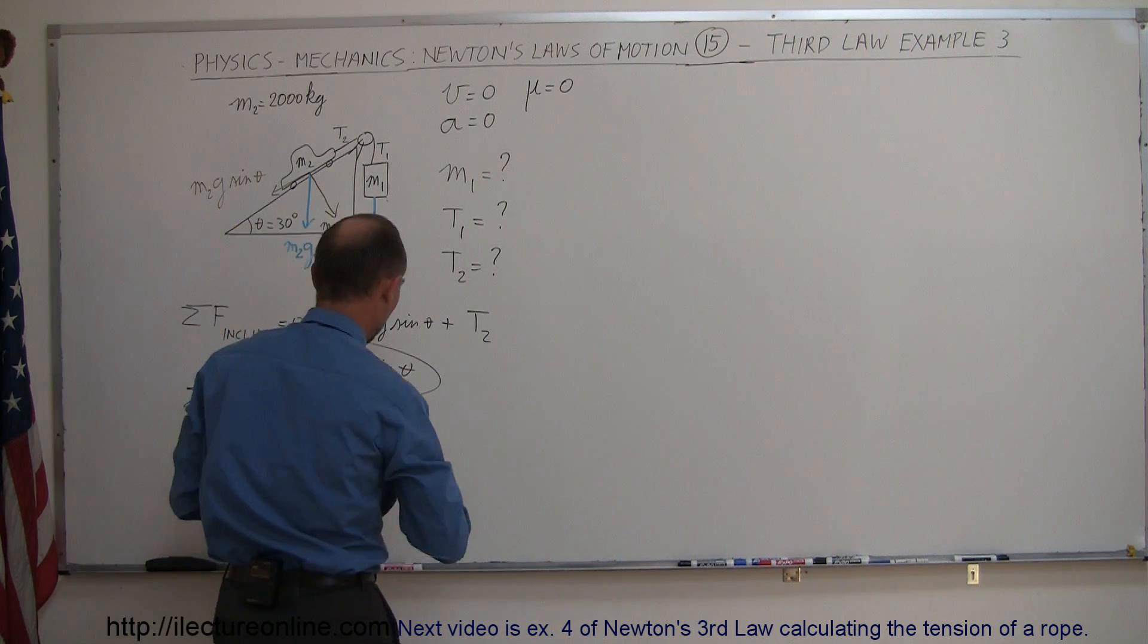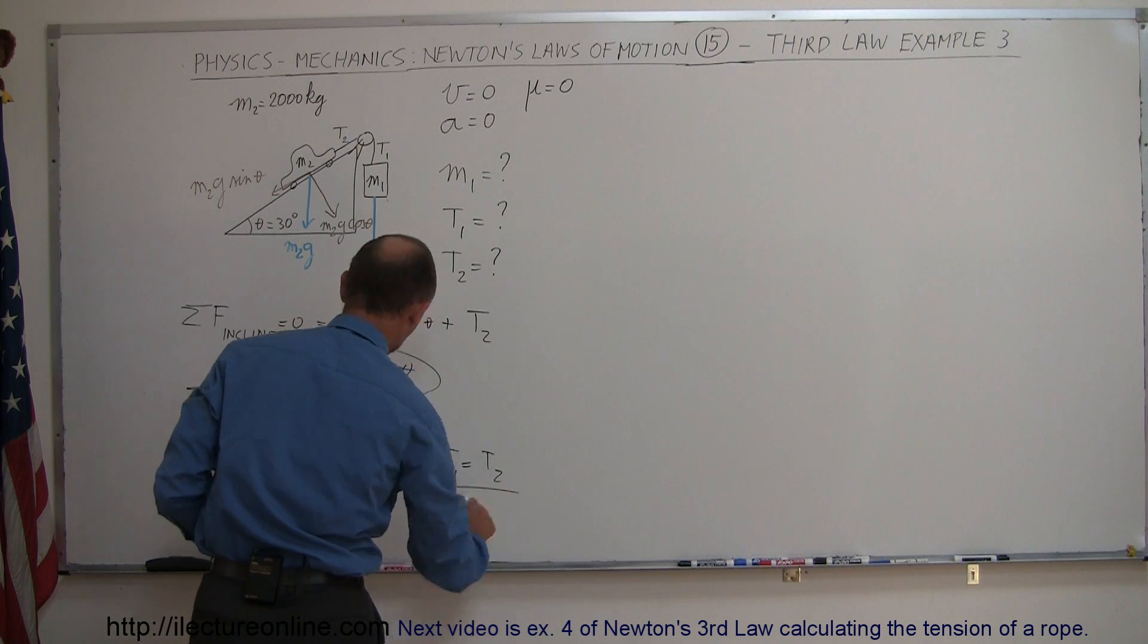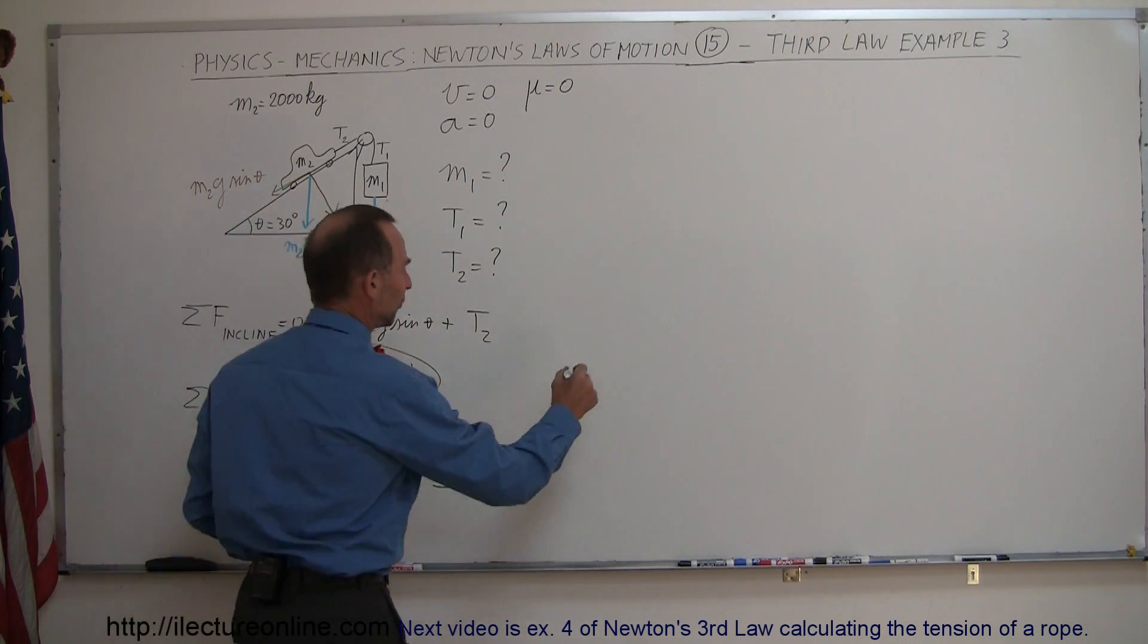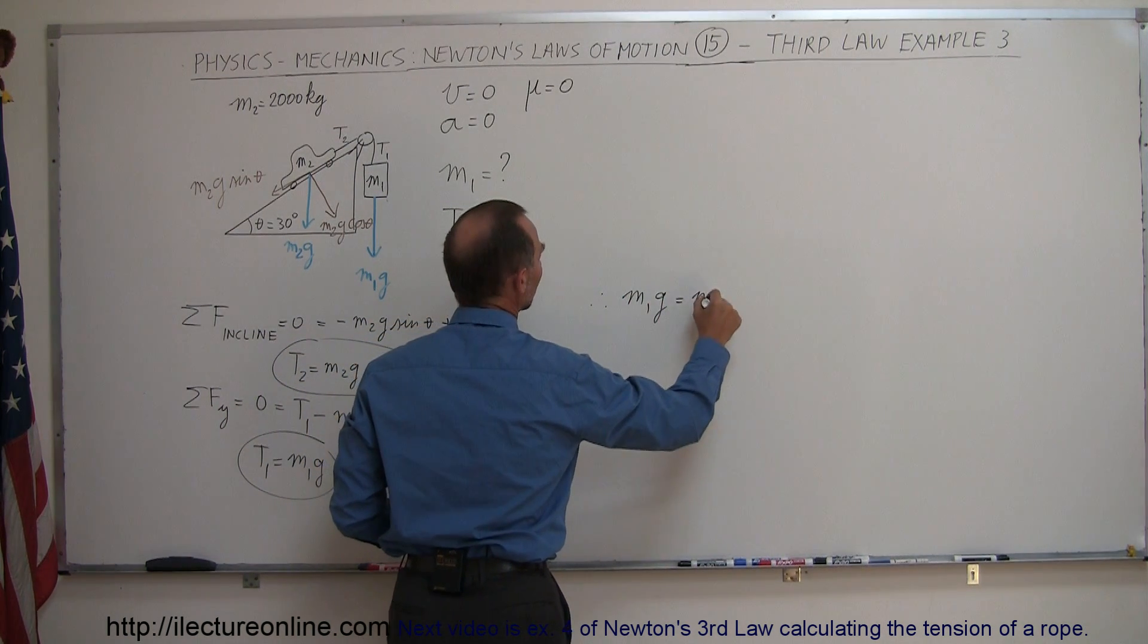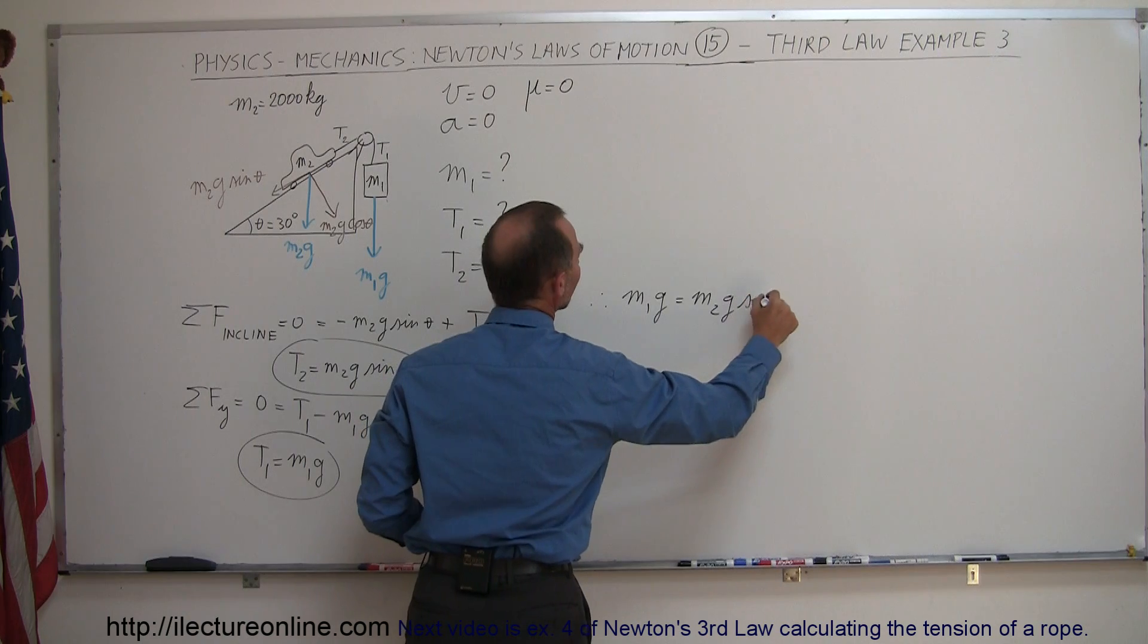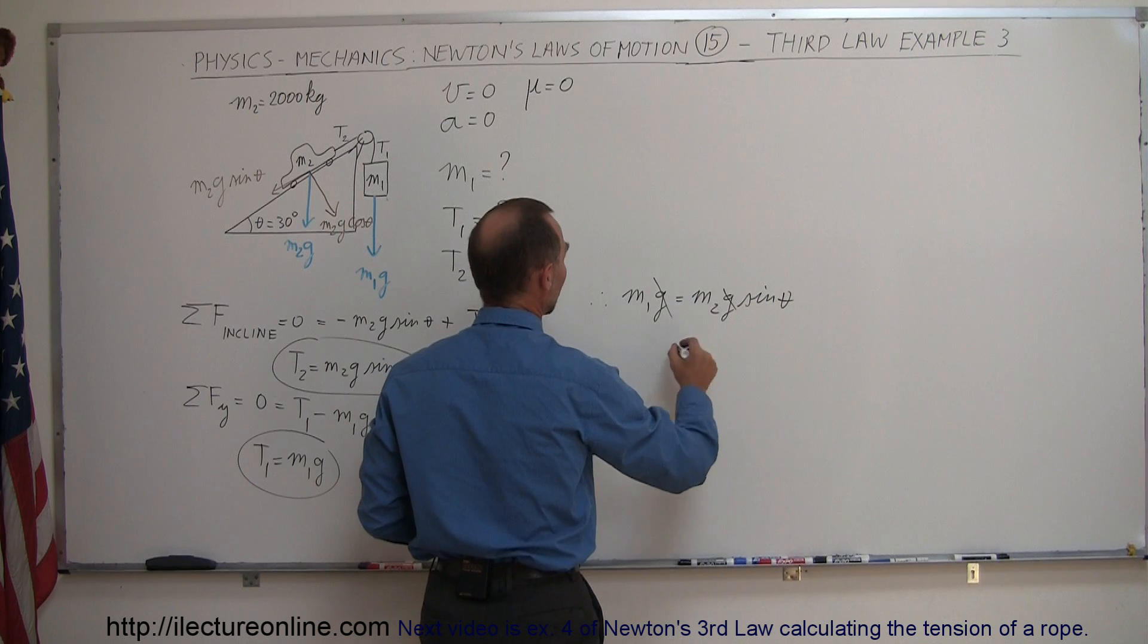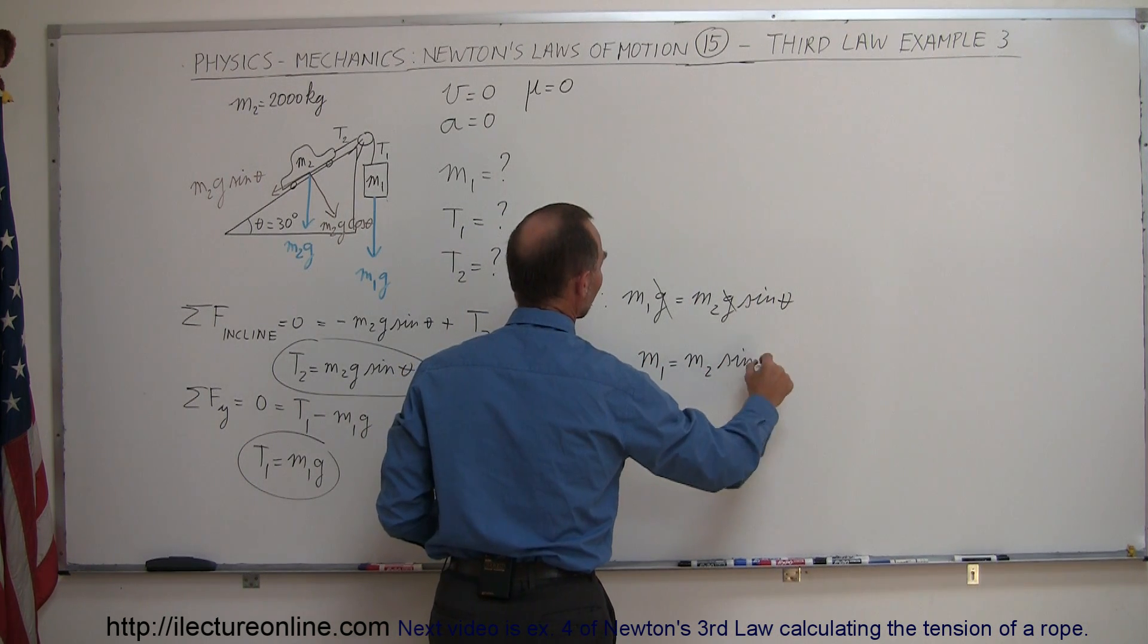So we can say also that T1 must equal T2, and if that is the case, then we know that M1G must equal M2G sine theta. So therefore, we can say that M1G must equal M2G sine theta. And if we divide both sides by G, get rid of the Gs, we can say that M1 must equal M2 sine of theta.